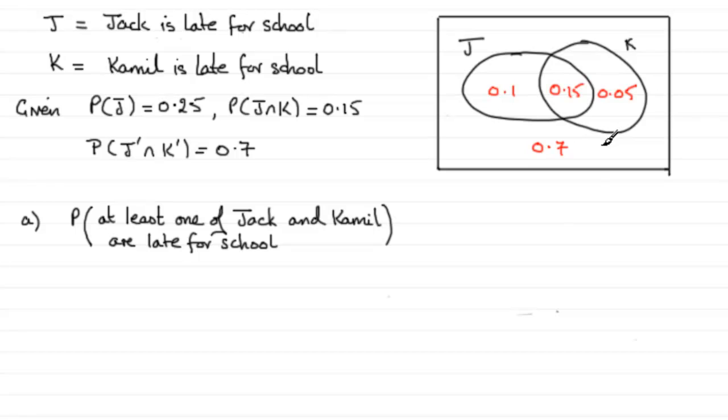So now I've got all the probabilities in the various regions. So when it comes to doing this question, the probability at least one of Jack and Kamal are late for school, this is actually the probability of J union K. J or K or both are late for school. And that's represented